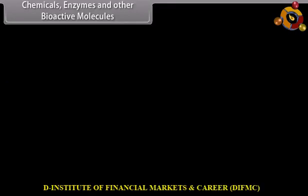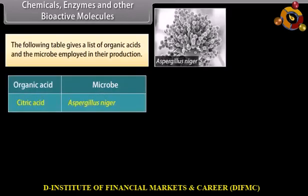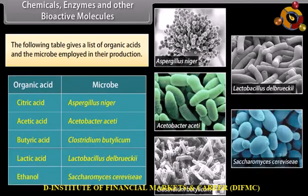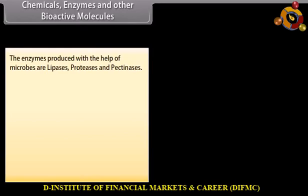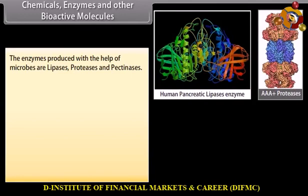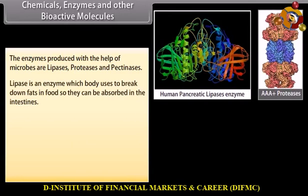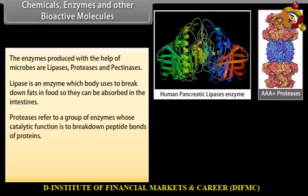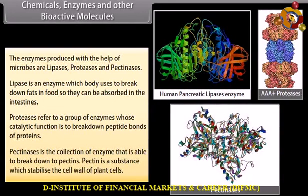Chemicals, enzymes, and other bioactive molecules. The following table gives a list of organic acids and the microbe employed in their production. The enzymes produced with the help of microbes are lipases, proteases, and pectinases. Lipase is an enzyme which the body uses to break down fat in food so they can be absorbed in the intestines. Proteases refer to a group of enzymes whose catalytic function is to break down peptide bonds of proteins.